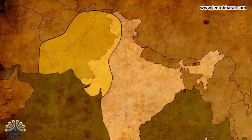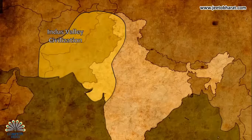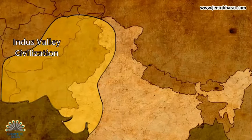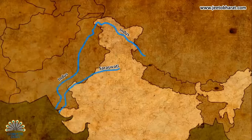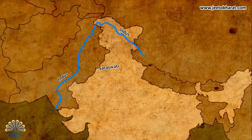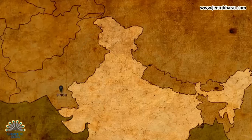The Indus Valley civilization was a Bronze Age civilization located in the northwestern region of the Indian subcontinent. Since many of the Harappan settlements are found on the vast plain of River Saraswati, which is dry today, it is also called the Indus-Saraswati civilization. The Harappan culture was spread over many parts of India including Sindh, Sukhtagandar in Balochistan.